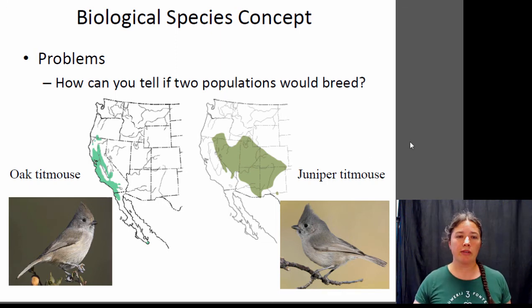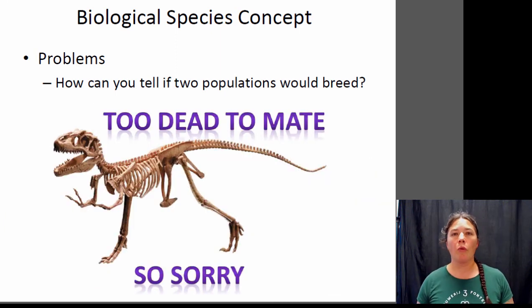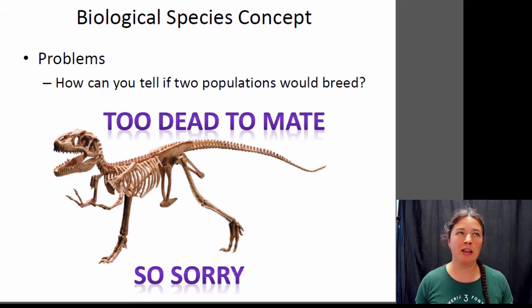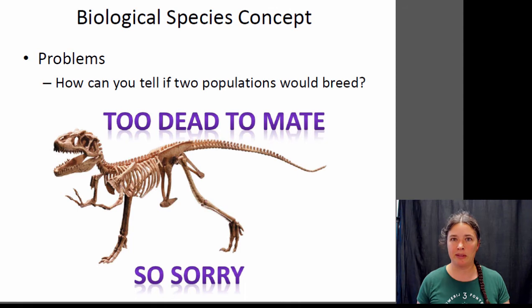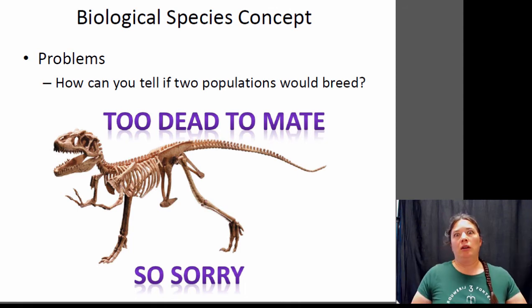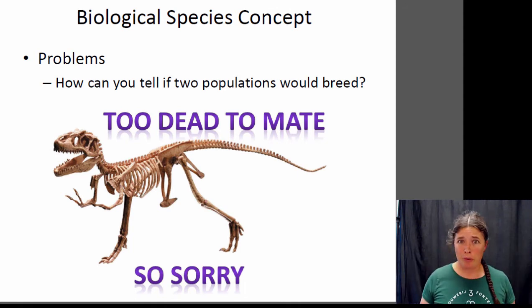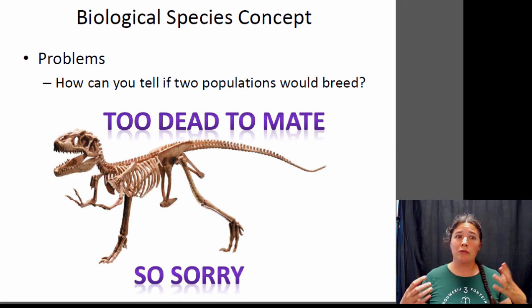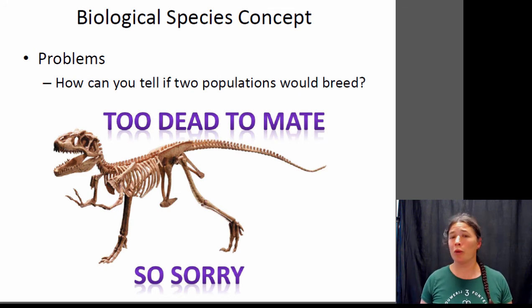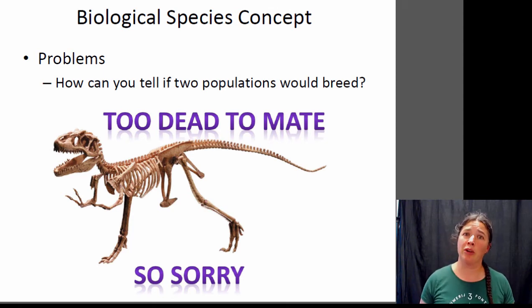That's one problem. What if you're a paleontologist who studies dinosaurs and you find a new fossil — is it a different species? You can't tell if it would mate with the other fossil you found. The biological species concept really doesn't work well at all for extinct organisms because you can't determine whether they would mate or not.